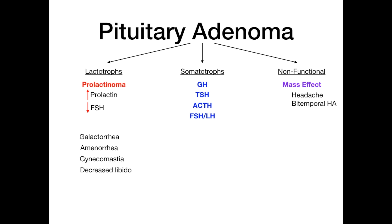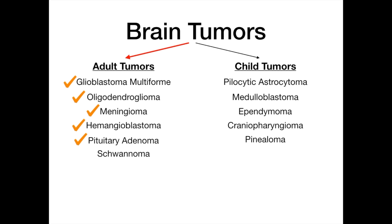To remember pituitary adenomas, just think 'adenoma' because you're adding hormones — prolactin, GH, TSH, ACTH, FSH, LH — or adding mass to create mass effect with headache and bitemporal hemianopia. Pituitary adenomas add hormones or add mass into the picture. This is a very, very high yield tumor to understand.